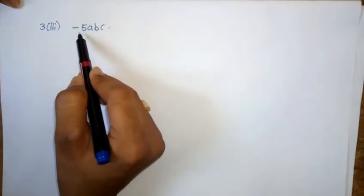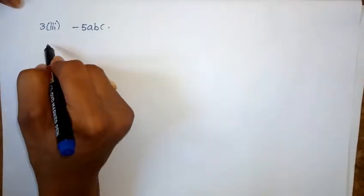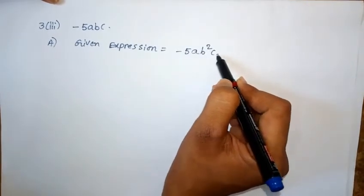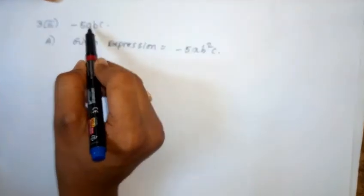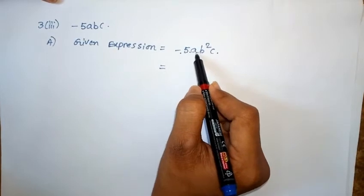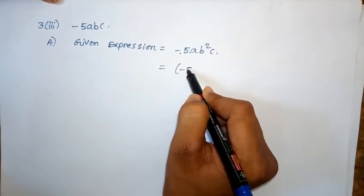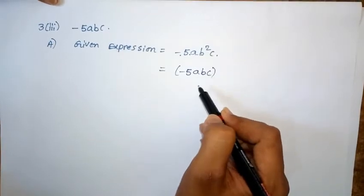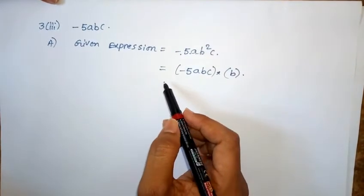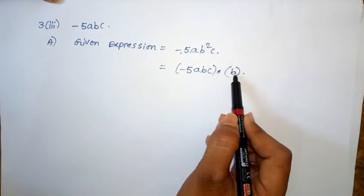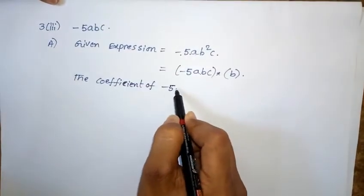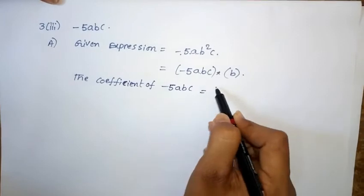Third problem, third one: find the coefficient of minus 5abc. Given expression is minus 5ab²c, also written as minus 5abc into b. So the coefficient of minus 5abc is equal to b only.